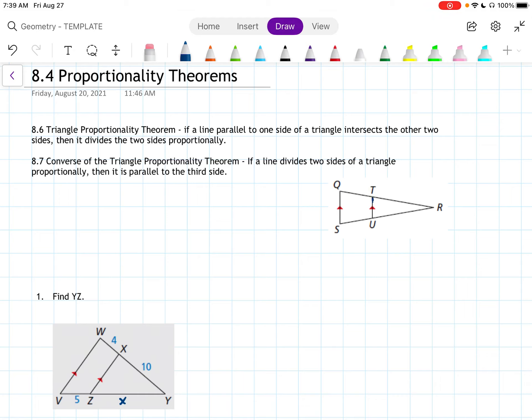What that's talking about is this side here, TU. It is parallel to QS. So it's telling us that it divides the other two sides, the two sides that are not highlighted, proportionally. What that could mean is that we could say, well, TR over QT is equal to UR over SU.